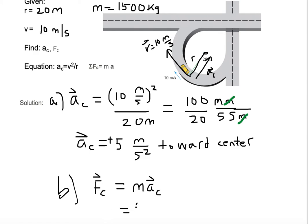Our mass is 1,500 kilograms, and then our acceleration is positive 5 meters per second squared. Then all we need to do is multiply it out.